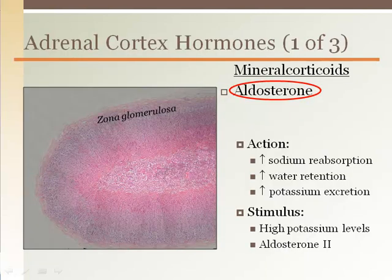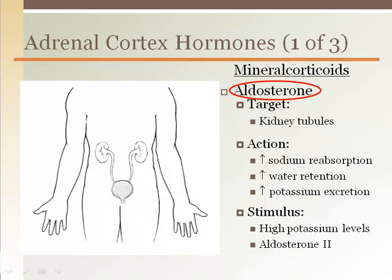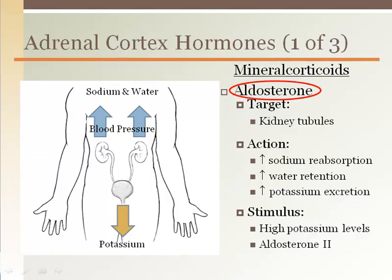The zona glomerulosa releases a family of hormones called mineralocorticoids. The main hormone you should know from this family is aldosterone. Aldosterone acts on the kidney tubules to retain sodium and water, which increases blood pressure. Aldosterone also increases potassium excretion via the urine.